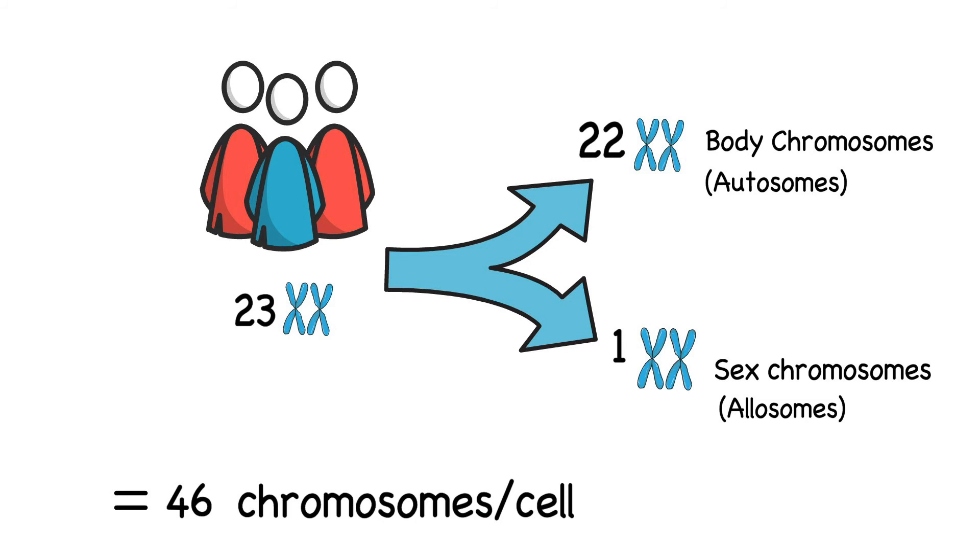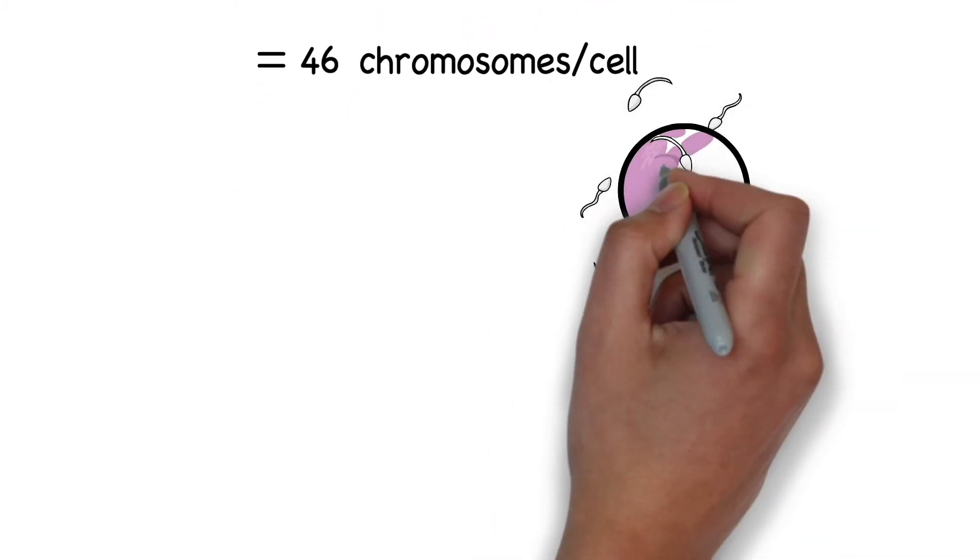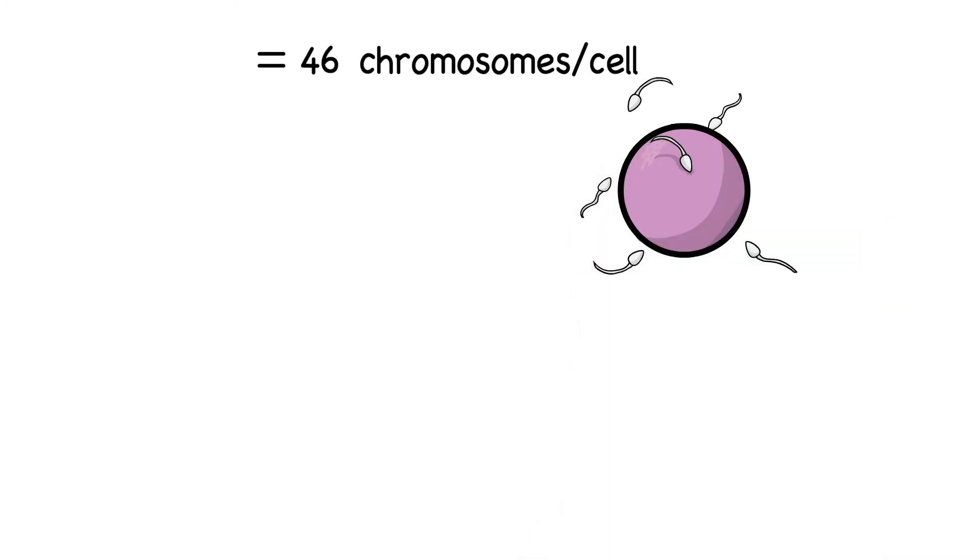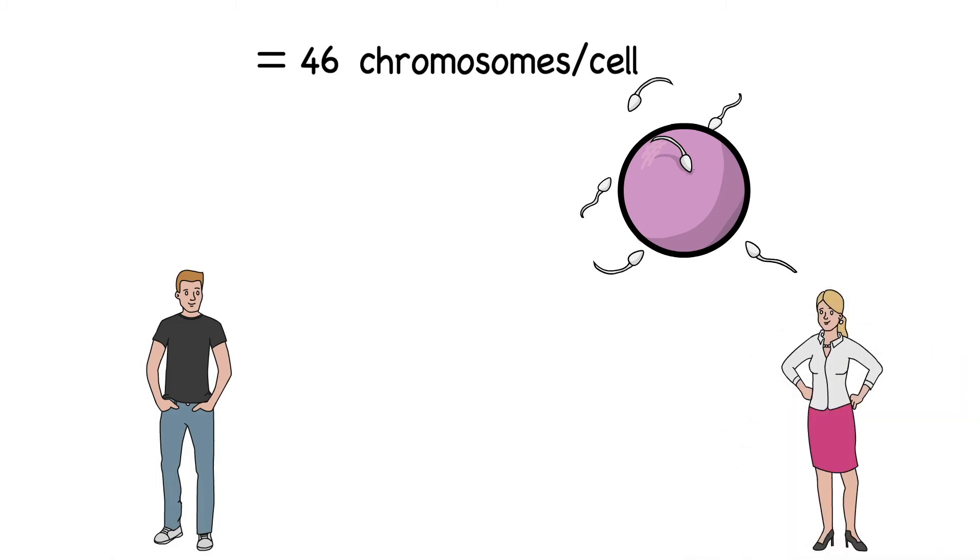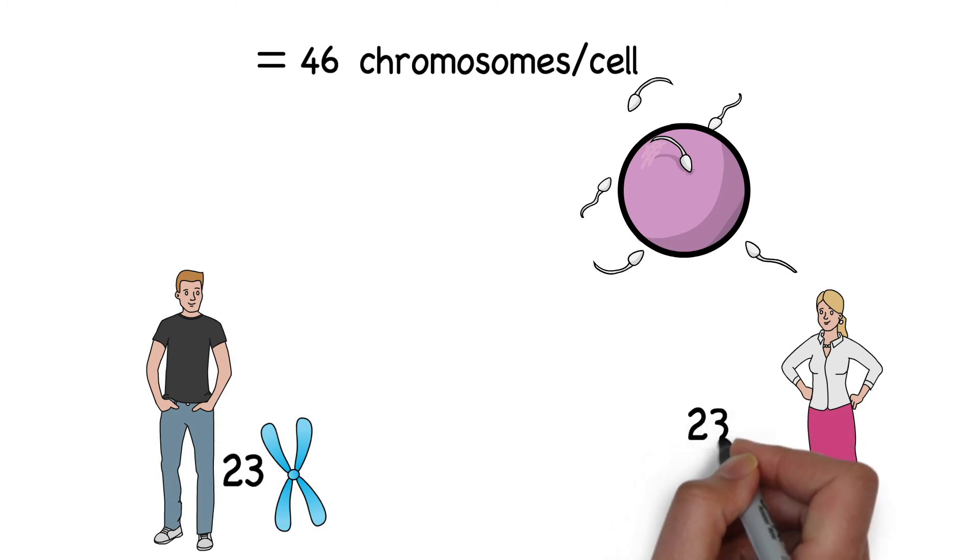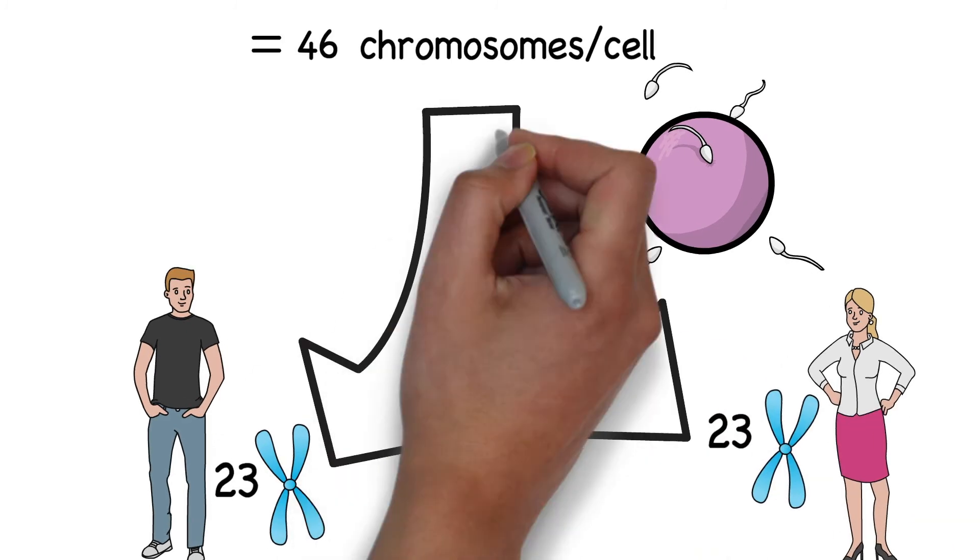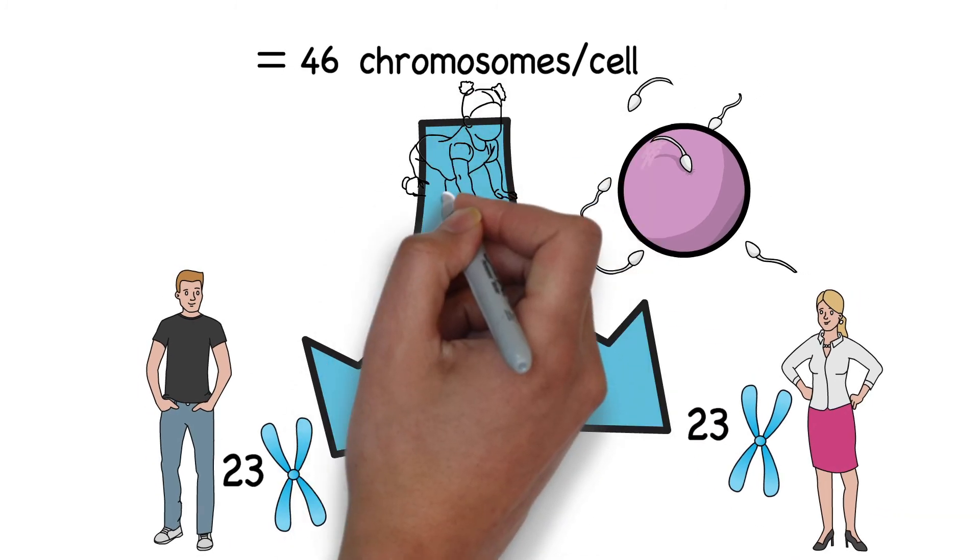Now let's see how did we get these number of chromosomes. During fusion of gametes, the father and mother both provide equal number of chromosomes, 23 each in their sperm and ovum respectively. Therefore, the baby has a total of 46 chromosomes.